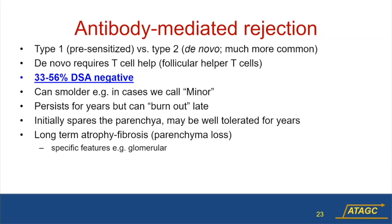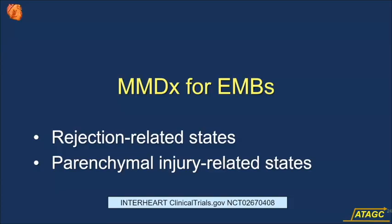Antibody mediated rejection is now recognized as about 50% DSA-negative. Both histologically and molecularly we see two types: the presensitized type one, which is rare, and the common type two — de novo antibody responses comprising about 30% of all indication biopsies. It can smolder for years below the level we call rejection. It initially spares the parenchyma and may be well tolerated for years, but long-term it produces atrophy fibrosis, and in kidney we see specific glomerular features.